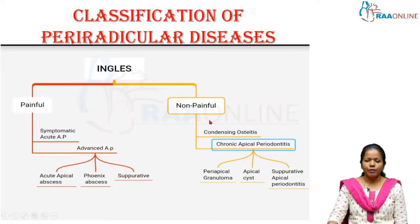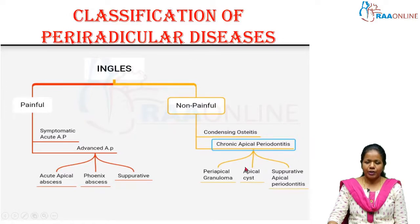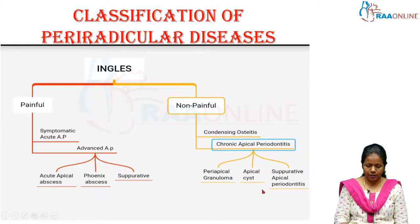Non-painful disease includes condensing osteitis and chronic apical periodontitis. Under chronic apical periodontitis, you have periapical granuloma, apical cyst, and suppurative apical periodontitis.